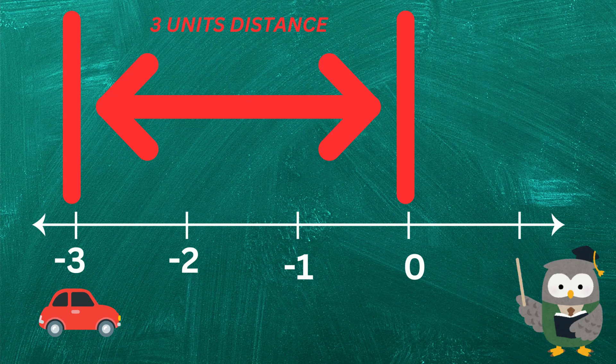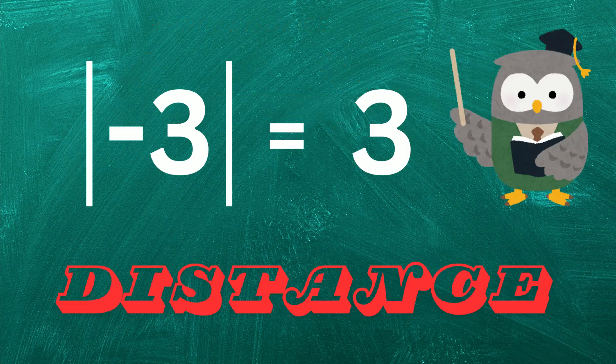Let's find its absolute value. See, even though the car started at minus 3, its absolute value is 3 because it's three units away from our special point.